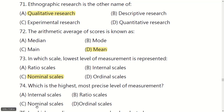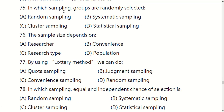Which is the highest, most precise level of measurement? Options are: interval scale, ratio scale, nominal scale, or ordinal scale. The right option is: interval scale.